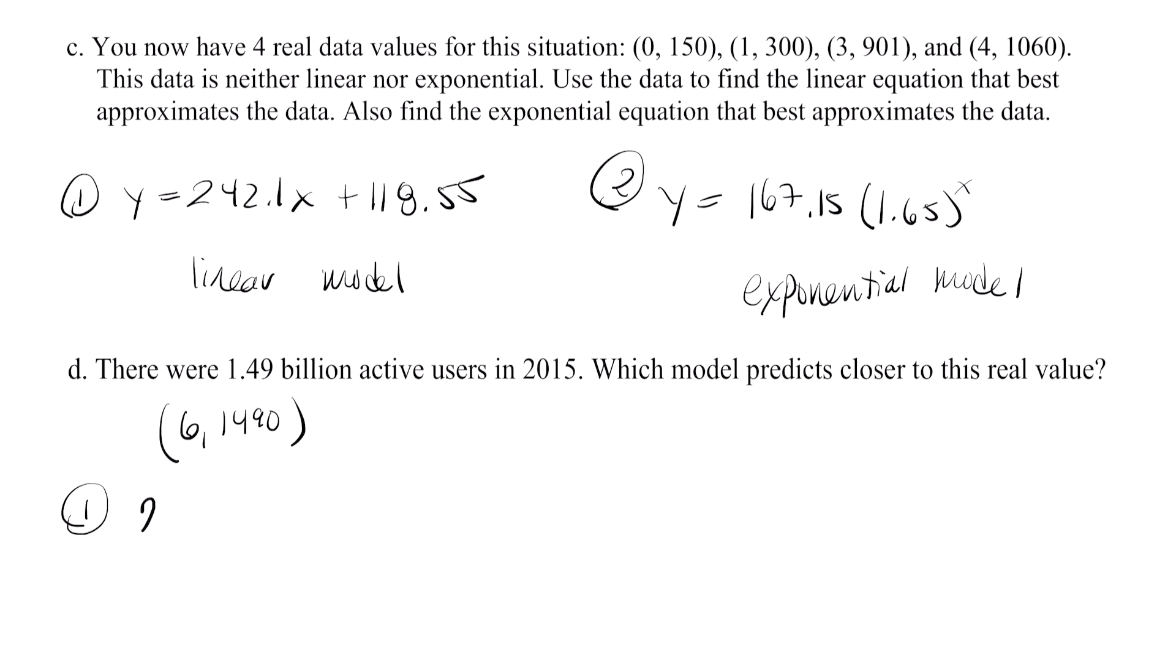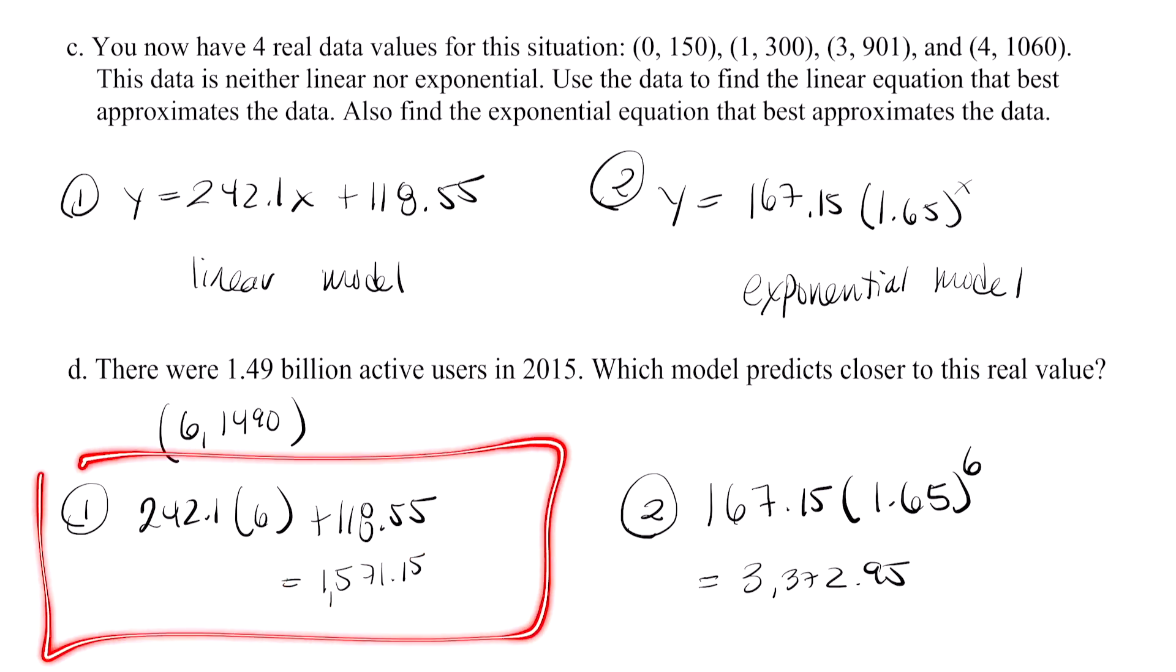Y equals 242.1 times 6 plus 118.55. And to test the exponential model, use your calculator to evaluate 167.15 times 1.65 to the sixth power. Take a moment and pause your video and compute both of those. Now taking a look at both of our models, they're both overestimates. But as you can see here, which one is closer to 1,490? The linear model is closer. So our linear model definitely best predicts the real value. I hope this video lecture was helpful.